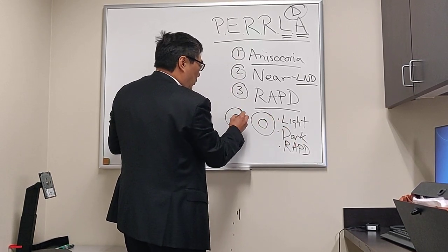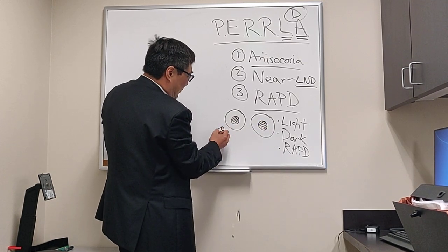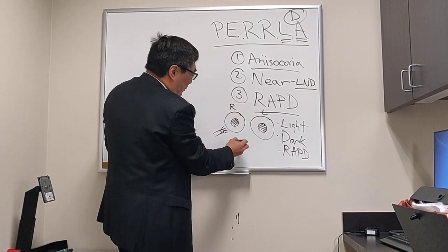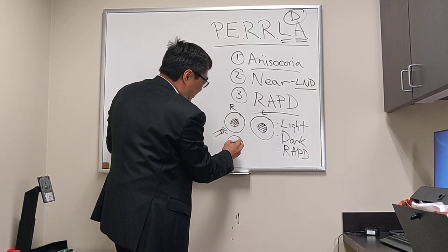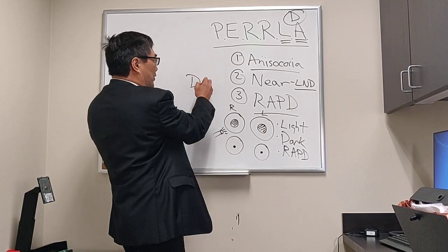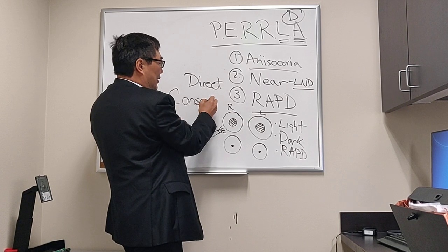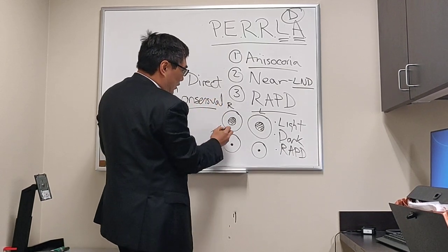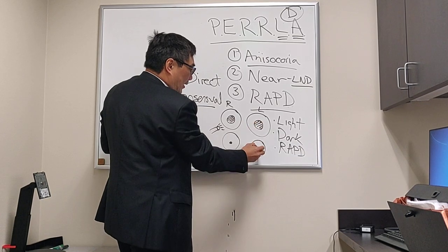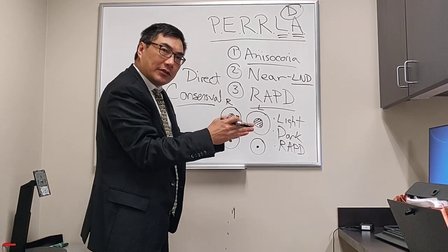When we have a normal pupil, if we shine the light into the right pupil, both pupils will constrict. That's because there's both a direct response to light and a consensual response in the fellow eye. When we have a direct response the pupil will constrict, and that will also be felt by the contralateral pupil because the innervation to the Edinger-Westphal nucleus is bilateral.